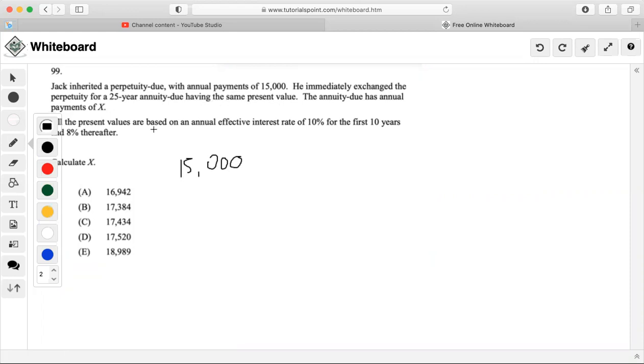All the present values are based on an annual effective rate of 10% for the first 10 years and 8% thereafter. So this looks like we have to set up two different equations equal to each other. But first, let's start with the perpetuity due. It says that he inherited a perpetuity of $15,000 and he immediately exchanged it for another type of thing.